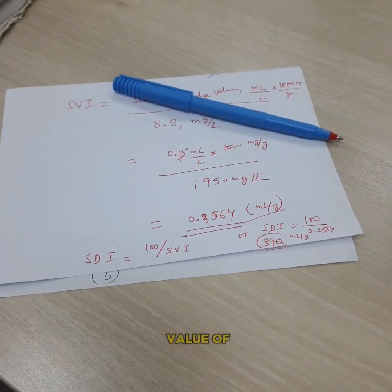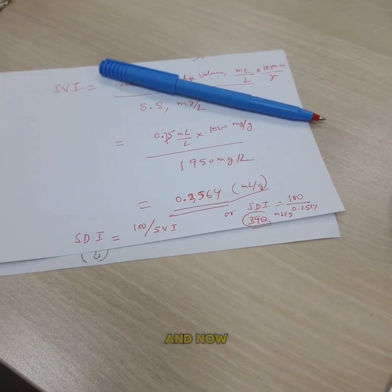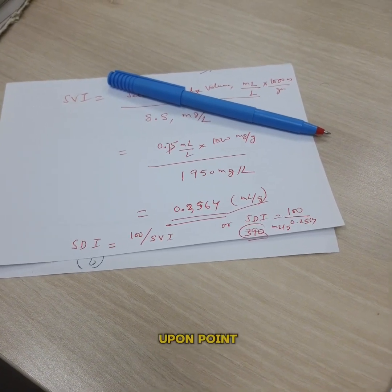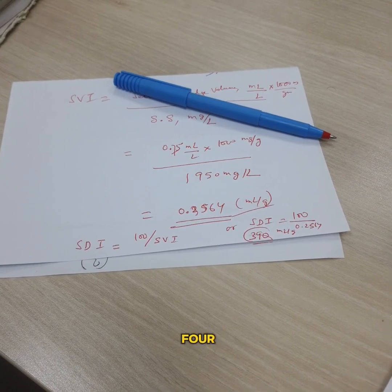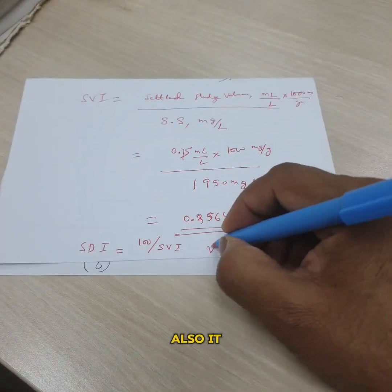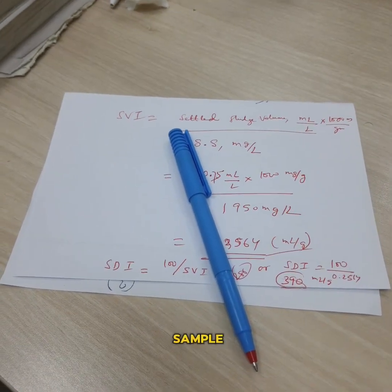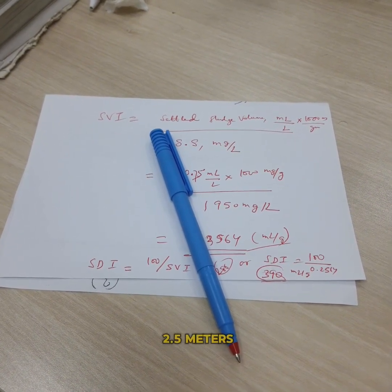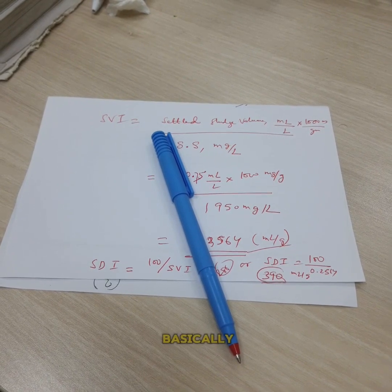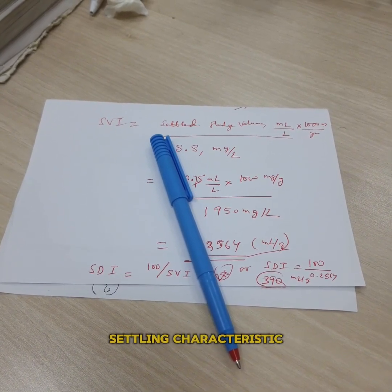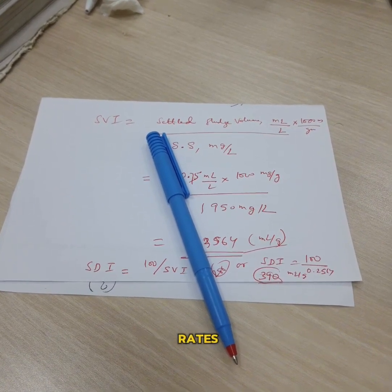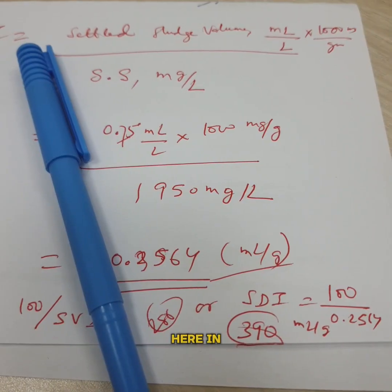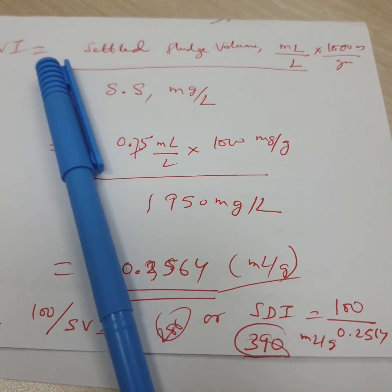This is around 0.384. This is very low and here you can conclude that sludge has a poor settleability. Usually the value of SVI lies from 50 to 150, so it is very low. Now the value of SDI is basically 100 upon SVI, so it is 100 upon 0.3564, which is equal to 280. Also it depends upon the way of sampling. As we took just one sample, the value is very low in case of SVI. Usually SDI also lies from 1 to 2.1, which is showing very high. SDI basically is like SVI to determine the sludge thickening characteristic and return sludge pumping rates. SVI basically will tell you how clear a good quality effluent is.